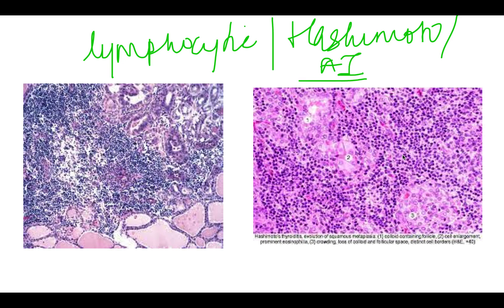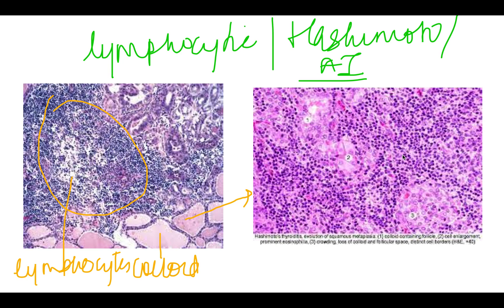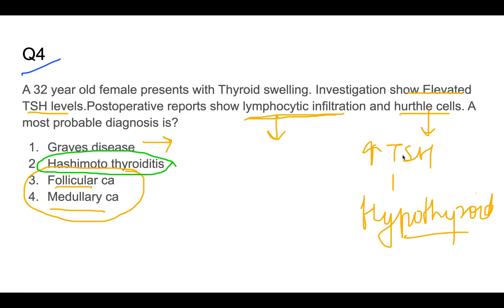Hashimoto's thyroiditis is also known as chronic lymphocytic thyroiditis or autoimmune thyroiditis. In the picture, you can see colloid in the center of the thyroid and extensive blue lymphocyte infiltration — it appears as if it is a lymph node in a thyroid gland. Hurthle cells are thyroid follicular cells with very high eosinophilic cytoplasm — the pink area. Lymphocytic infiltration along with hurthle cells is diagnostic of Hashimoto's thyroiditis.